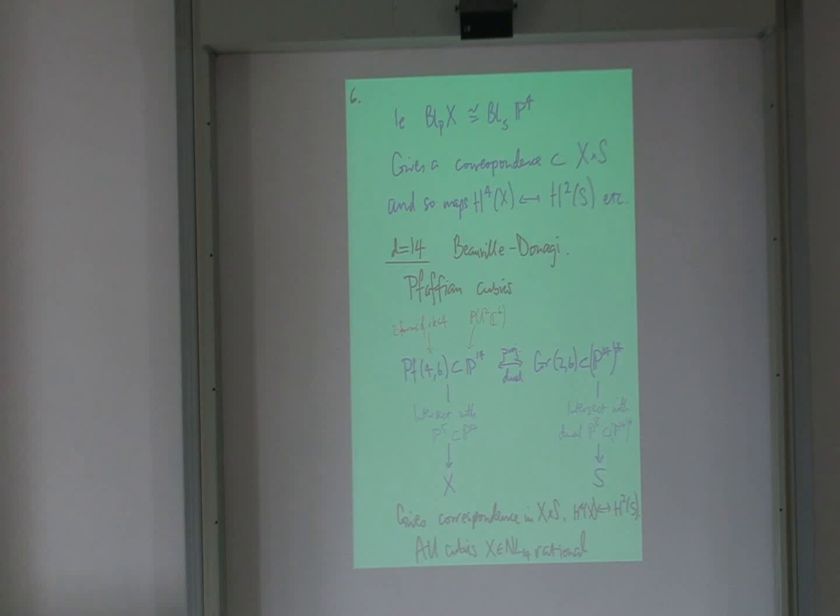That's the so-called Fano variety inside P14. Intersect that with a generic P5, that's where the cubic fourfolds live. This is a cubic hypersurface, this Fano in here, and you get a cubic fourfold.